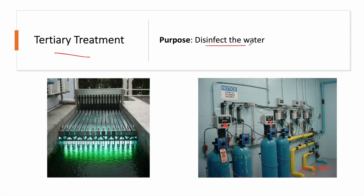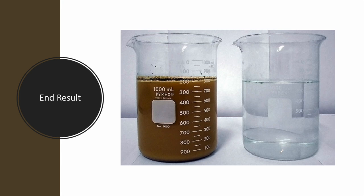Finally, the last stage is tertiary treatment, where we disinfect the water. This can be done using UV lights, which involve no chemical addition to the wastewater, or through chlorination — adding chlorine either in gas form via gas chlorination systems, in liquid form as a chlorine solution, or even as chlorine tablets for small wastewater treatment systems.